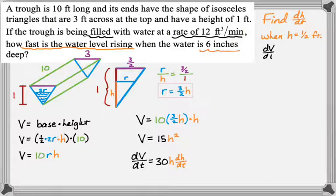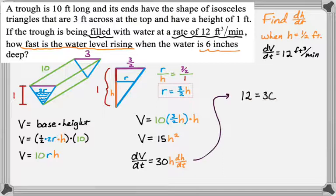So, I have dV/dt, I know h at the exact moment, and all I want to do is solve for dh/dt. So, let's go up here and fill in. We have 12 is 30 times 1 half dh/dt, which means that dh/dt is 12 over 15.